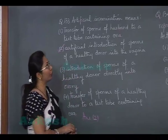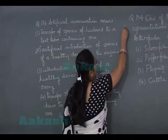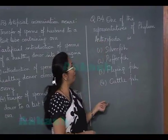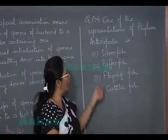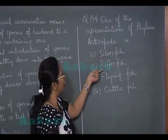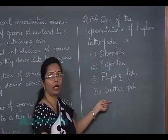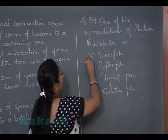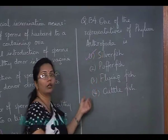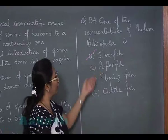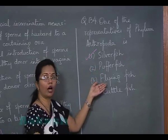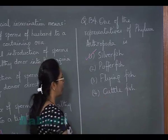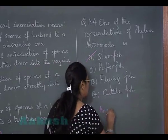Question 134: One representative of phylum Arthropoda — out of silverfish, pufferfish, flyingfish, and cuttlefish — is silverfish, which is an insect without wings and an arthropod. Pufferfish and flyingfish are true fish, while cuttlefish is a mollusk. The answer is option 1.